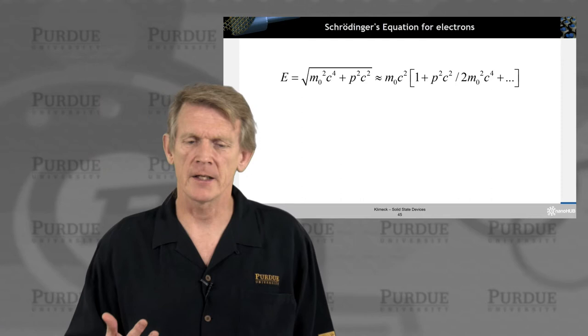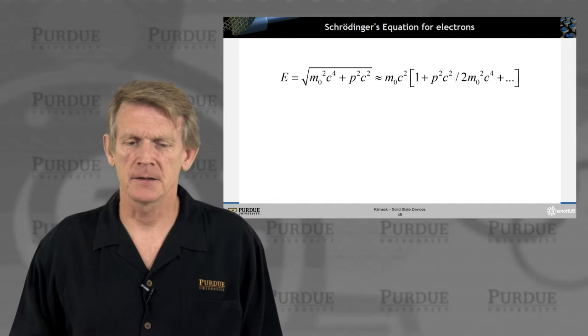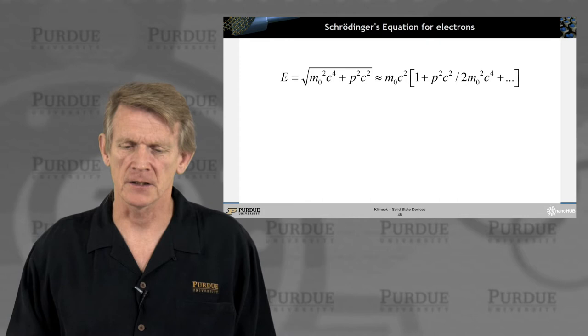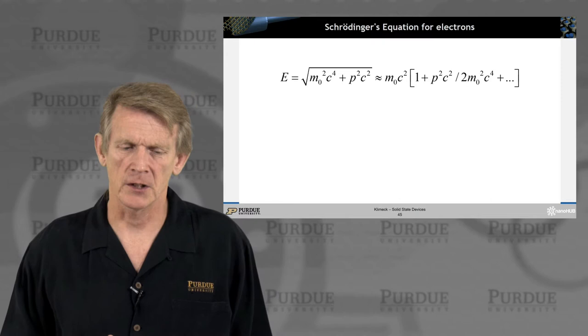Where we start is writing down Dirac's equation for an electron and expanding that Dirac equation, the root of that Dirac equation by a Taylor expansion, and stopping at the first element of that Taylor expansion.